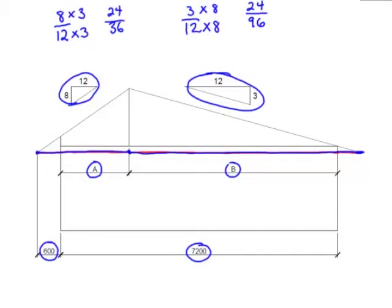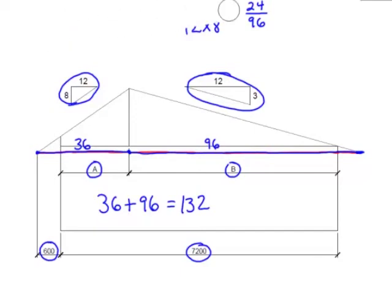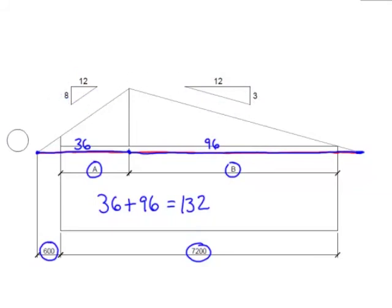So what that means is we have 36 units of run on the left side and 96 on the right, for a total of 132 units of run. So that's important. Okay, next step.